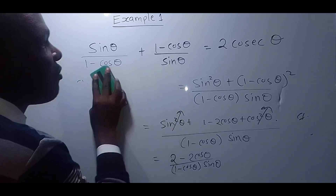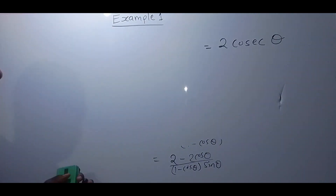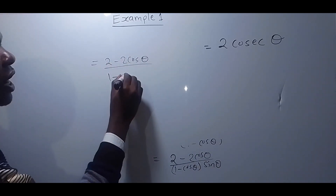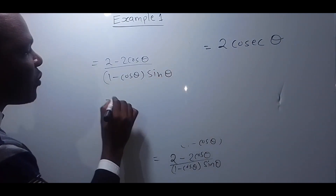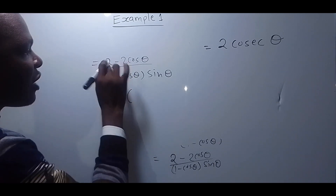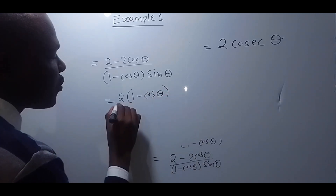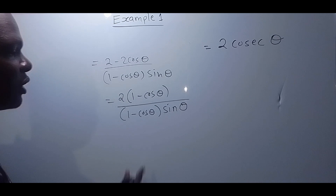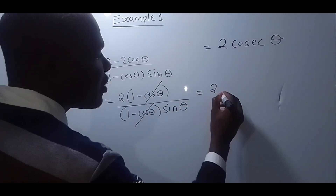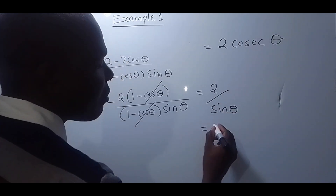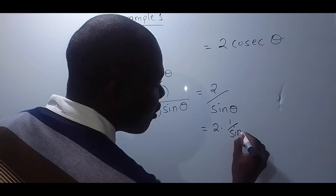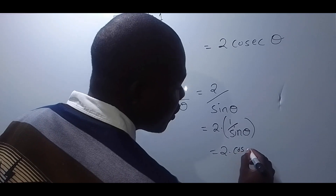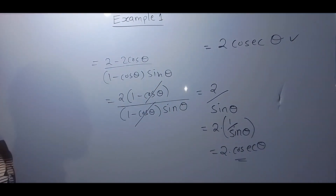Looking at the numerator, we can see a common factor. Factoring out 2, we get 2 times 1 minus cos theta, all over 1 minus cos theta times sin theta. The 1 minus cos theta cancels, leaving 2 over sin theta. Since 1 over sin theta is the reciprocal of sin theta, which equals cosec theta, we get 2 times cosec theta. And that is exactly what we were told to prove.